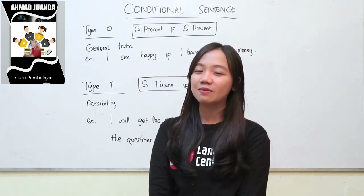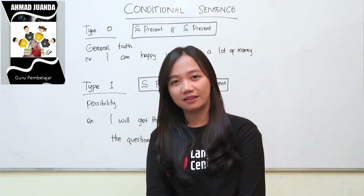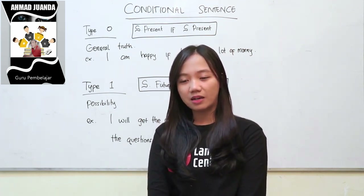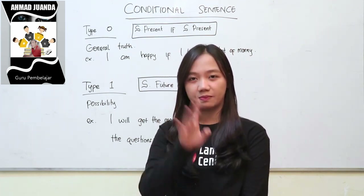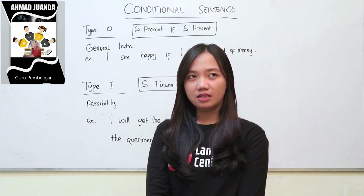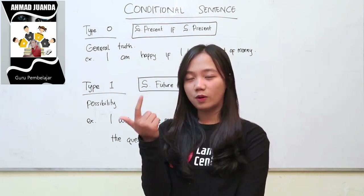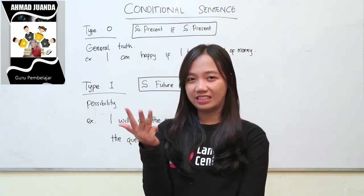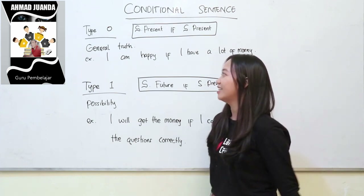Di sini conditional sentence, teman-teman, adalah kalimat pengandaian. Kalimat pengandaian ini macamnya sebenarnya ada 4: ada type 0, type 1, 2, and 3. Okay, let's check it.